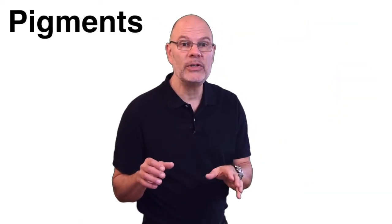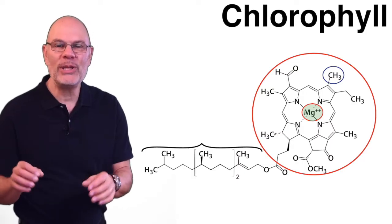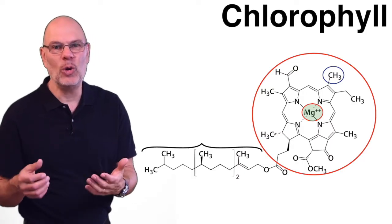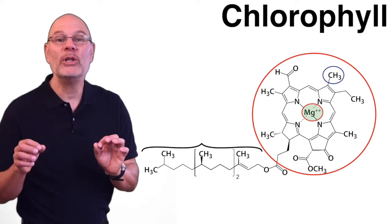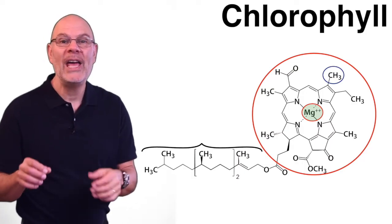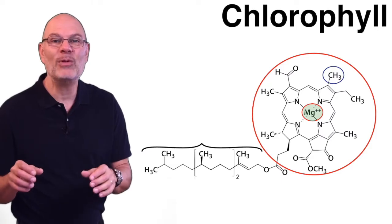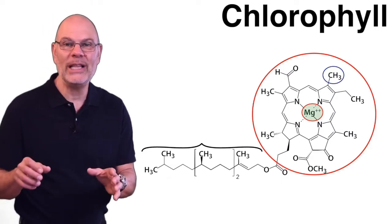Pigments are substances that absorb certain wavelengths of light and reflect others. Right now I'm wearing a red shirt — it's red because of pigments that are absorbing blue, yellow, and green wavelengths and reflecting red wavelengths back into your eyes. The main pigment in photosynthesis is chlorophyll. There are two forms and they absorb red and blue light and reflect green light.